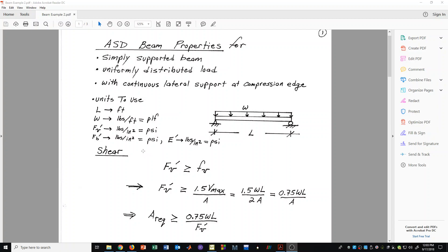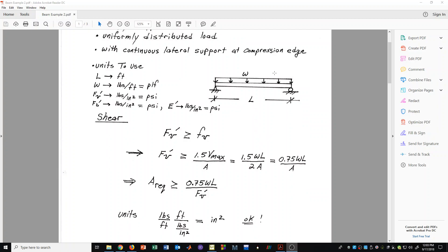The first thing that we need to do is develop some equations for shear design. We are doing that for our simply supported beam with a uniform load, and so we start from the basic allowable stress design formula. Fv' must be greater than or equal to Fv, and so we can manipulate this formula.